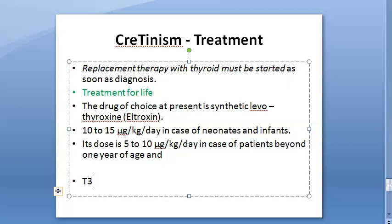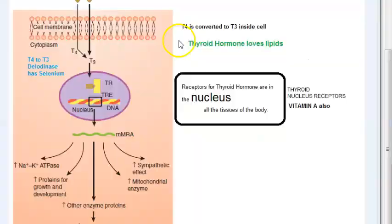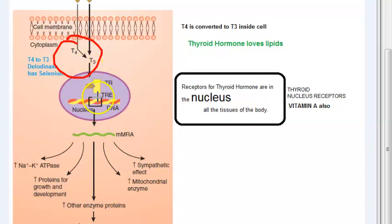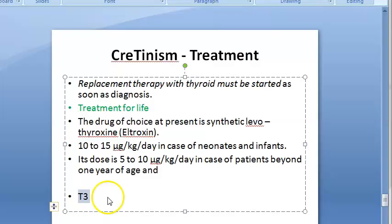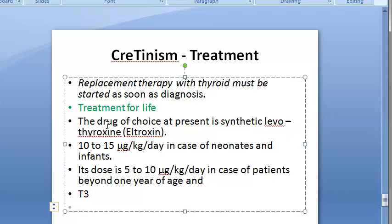Triiodothyronine (T3) is not routinely recommended but some note that its rapidity of action may be of advantage, since T3 is the active form used by cells. T4 is converted to T3 inside the cell, and T3 is taken up by nuclear receptors leading to protein synthesis. The hypothalamic-pituitary-thyroid axis: hypothalamus releases TRH, pituitary releases TSH, and the gland releases T3/T4. After treatment, expected improvements include return of activity, control of constipation, warmth of skin, improved appetite, and normalization of PBI and T3/T4 levels.